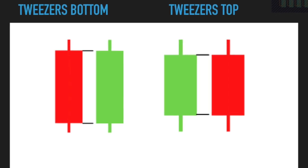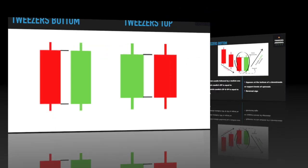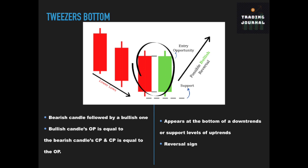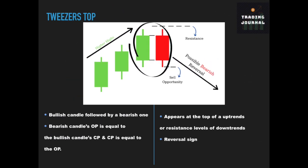The next most used patterns are tweezer's bottom and tweezer's top. Tweezer's bottom starts with consecutive bearish candles forming lower lows. These consecutive bearish candles are followed by a bullish candle whose opening point is equal to the closing point of the last bearish candle, and its closing point is equal to the opening point of the previous bearish candle. There is a high probability that the price will go up after tweezer's bottom. Tweezer's top is the opposite and occurs at resistance levels of downtrends or at the top of uptrends. Bullish candles are followed by a bearish candle whose opening point equals the closing point, and the closing point equals the opening point of the previous bullish candle. It indicates that bears are getting stronger.